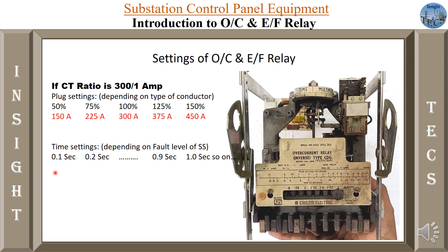The second setting is the time setting multiplier, which can be set to 0.1, 0.2 seconds and so on. When 150 amperes flows and the disc starts rotating, within 0.1 seconds the contact will be closed — the plunger will operate and change the NO to NC contacts, sending the trip command to the breaker or master relay. According to the IDMT curve and the requirements of the system, we have to set the time settings based on the fault levels of the substation. Higher the fault level, the time setting will be done accordingly.